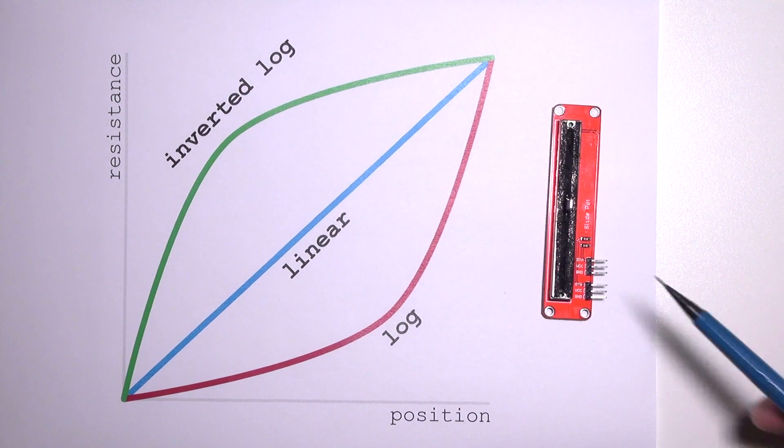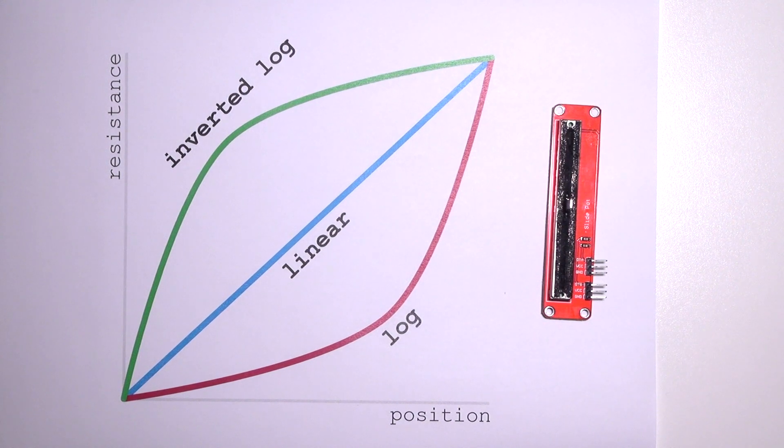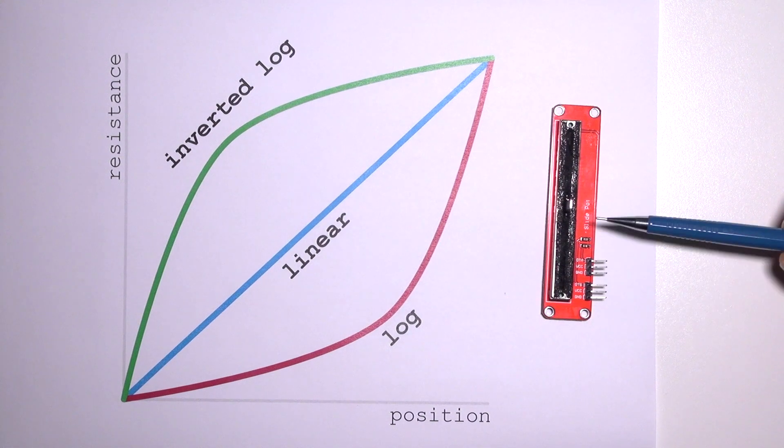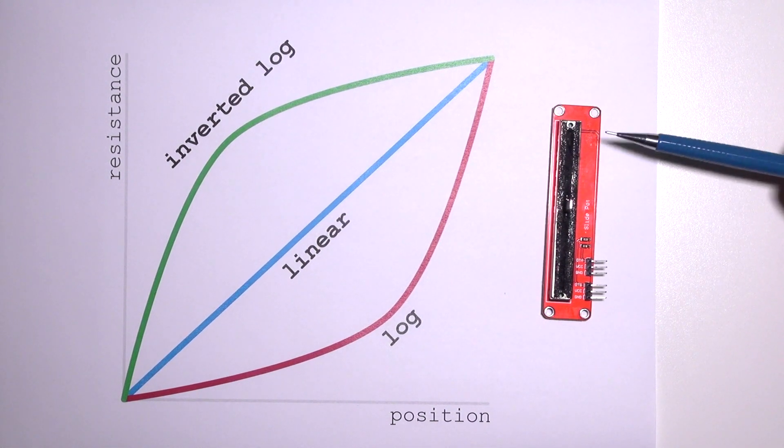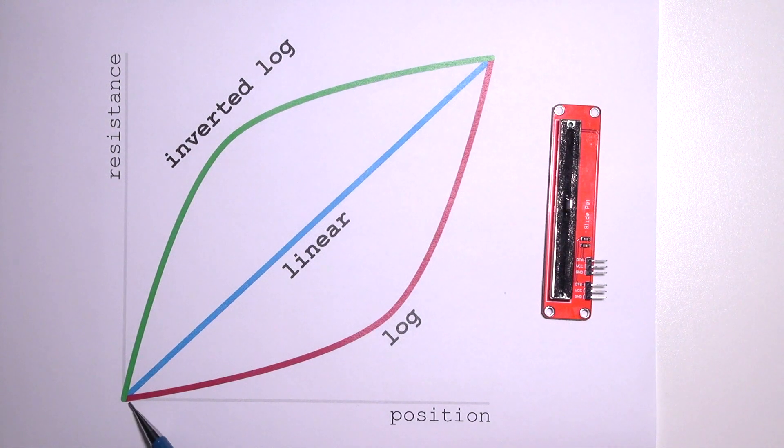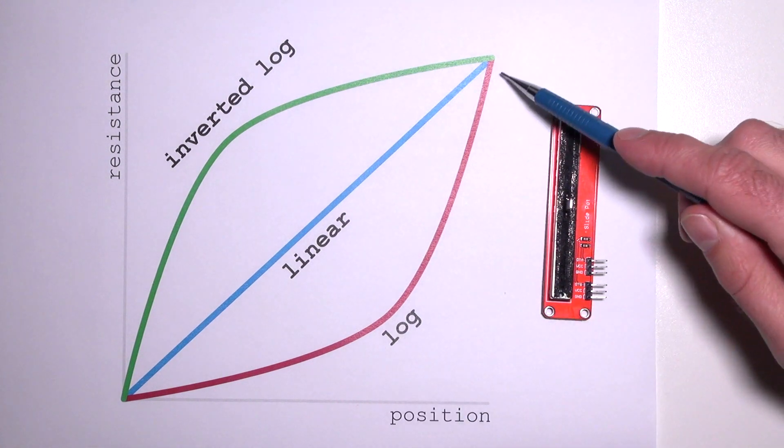The thing is that this sliding pot has a logarithmic scale. So what it means is that from the bottom to the center is the same as from the top to the center. That's what you see here in the chart.